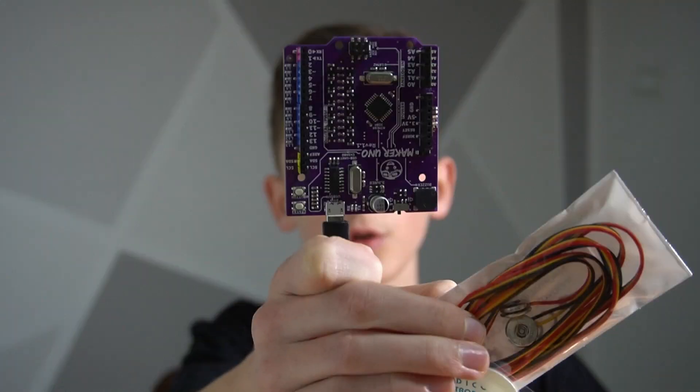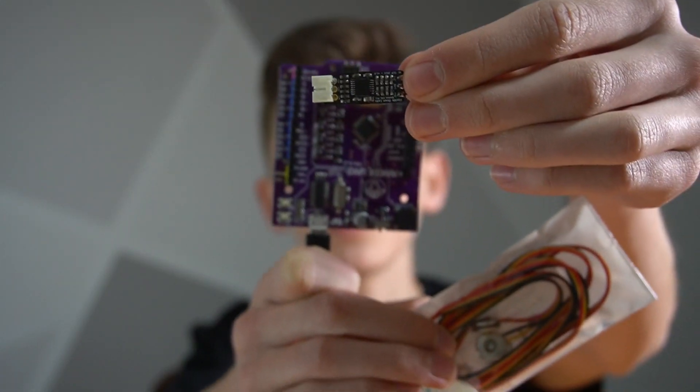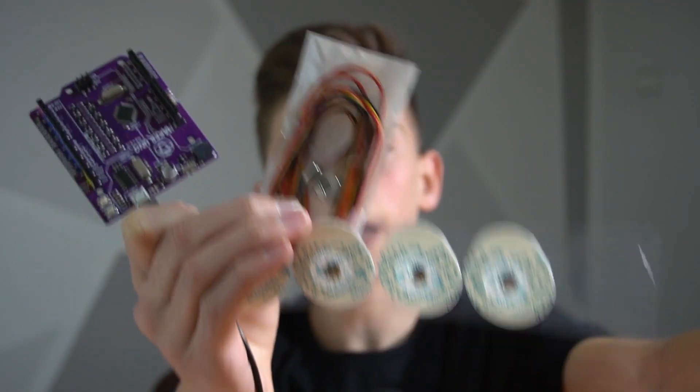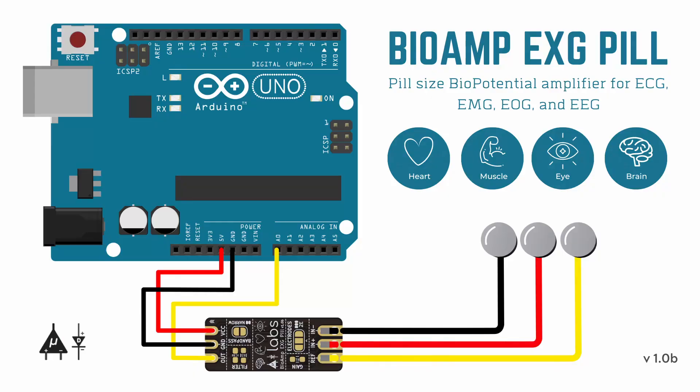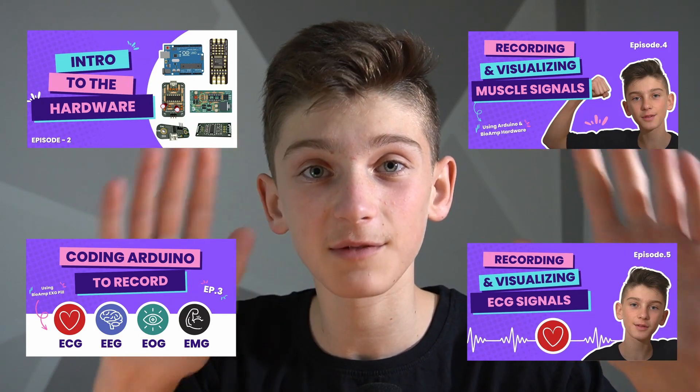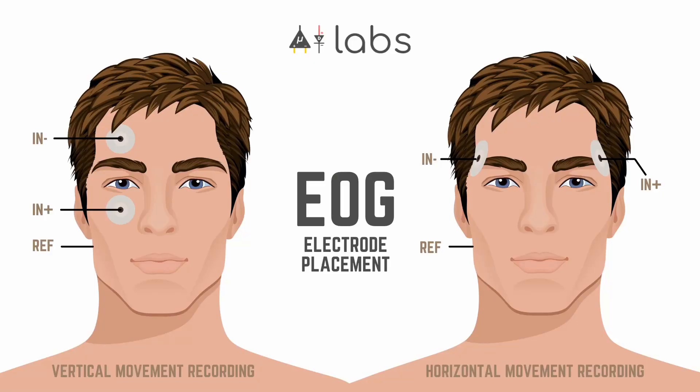In order to read the signals in the first place, you'll need an Arduino Uno, a bioamp EXG pill chip, a bioamp cable, and a few electrodes. You don't need to put the electrodes on your eyes — you can conveniently place them according to these diagrams. One is for horizontal and one is for vertical movement. The reference electrode goes on a bone behind the ear.